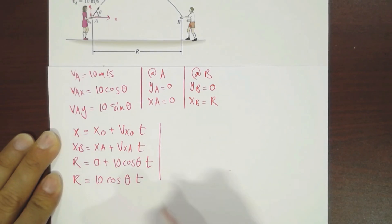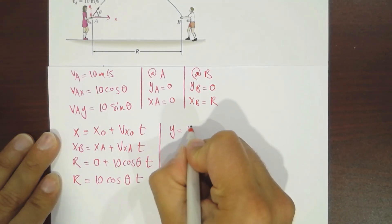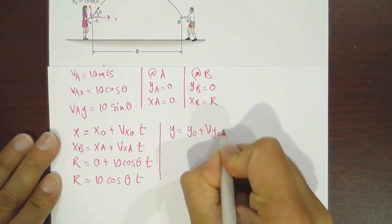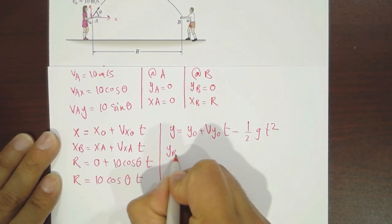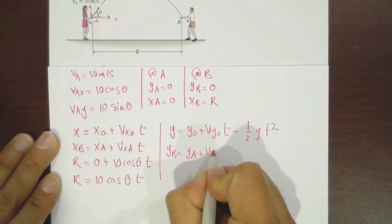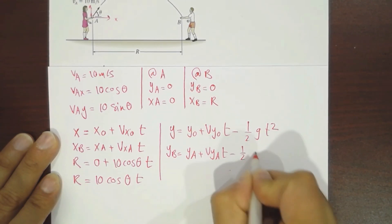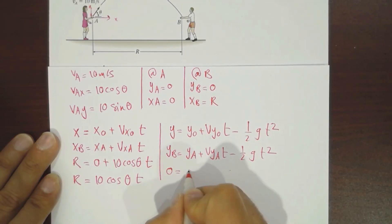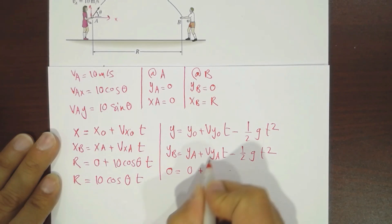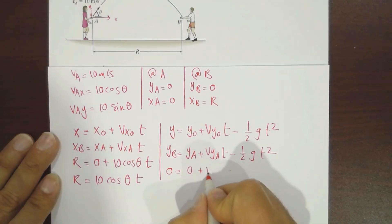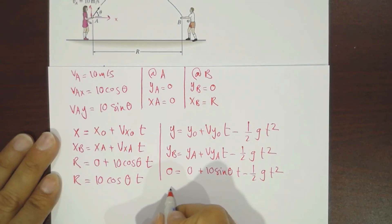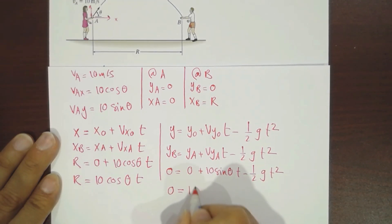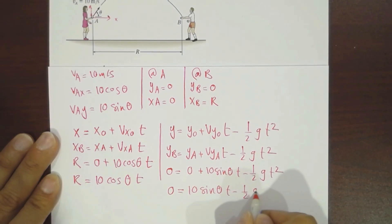Now we move to the Y component of the motion. The equation is Y equals Y-naught plus V_Y-naught times T minus one-half G T squared. Applied to our case: Y_B equals Y_A plus 10 sine theta times T minus one-half G T squared. Since both Y_B and Y_A equal zero, this gives zero equals 10 sine theta times T minus one-half G T squared.